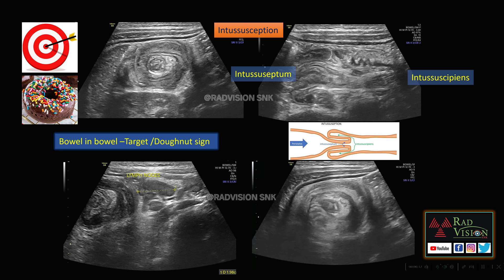Coming to the first case, this is the common target pattern we see in children. They present with chronic or acute sudden abdominal pain with vomiting. Here you can see this is the classical bowel-in-bowel appearance. This is the intussusceptum and this is the intussus septum, and these are a few lymph nodes which may sometimes be the causative factor for the intussusception.